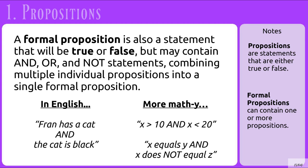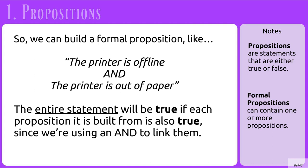In English, this would be like if we said 'Fran has a cat and the cat is black.' Or, in more math terms, 'x is greater than 10 and x is also less than 20.' So we can build a formal proposition with two separate propositions, like 'the printer is offline and the printer is out of paper.' The entire statement will be true if each proposition it is built from is also true, since we're using AND to link them.